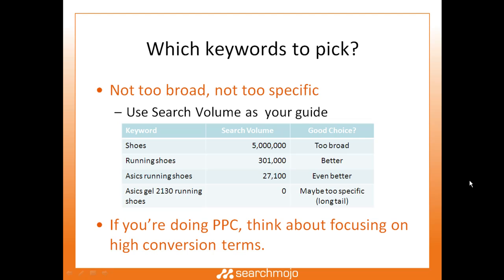Which keywords should you pick? The guideline is: don't pick too broad and don't pick too specific. Use search volume as your guide. Search volume is the approximate number of searches done in a given month on a search engine like Google for a particular keyword or phrase. Here I have a table with three columns: the keyword, the search volume, and whether it's a good or bad choice.